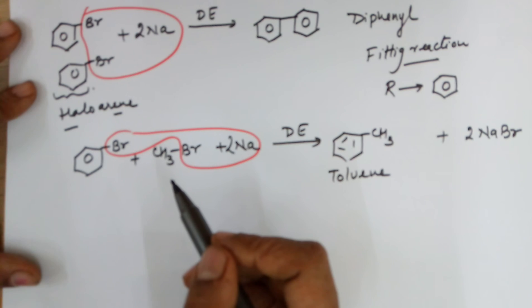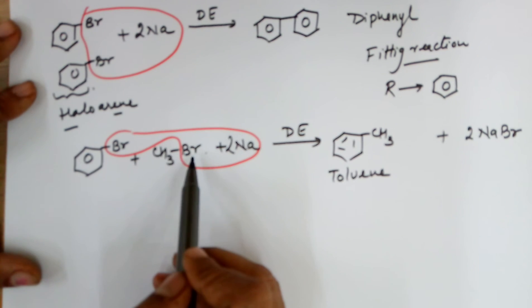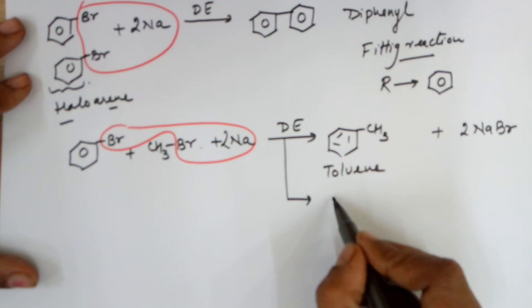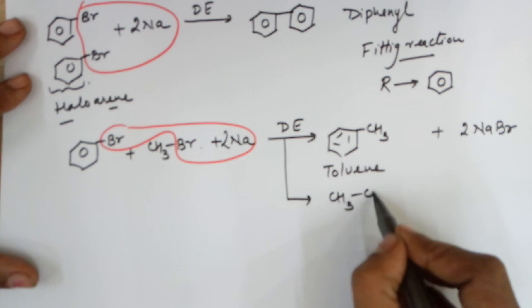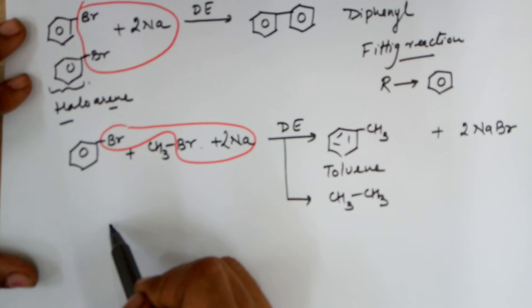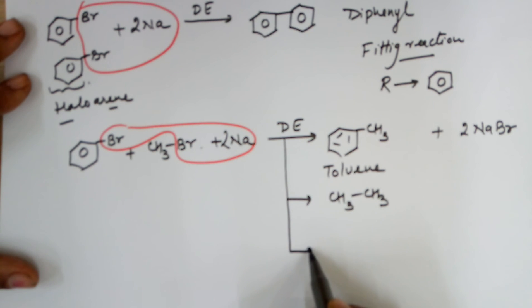On the parallel lines when you had two different R groups, I explained that you could get three types of products. On the same lines in this case also, the expected product apart from toluene could be ethane. In this case two methyl bromide molecules are combining with each other. In the third case you have both the bromobenzene combining to give you diphenyl.